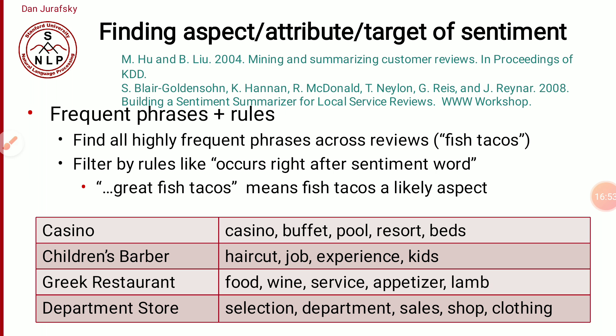In 2004, Hu and Liu created a rule-set for identifying aspect attribute targets of sentiment. They said we need to find highly frequent phrases across the review. For example, the word 'fish.' We need to target all the highly frequent phrases. The second thing is to filter by rule — if any sentiment word occurred right after a phrase, then that phrase is likely the aspect. For instance, 'great' is a sentiment word (adjective), and if 'fish tacos' appears just after the adjective 'great,' then 'fish tacos' is likely an aspect.